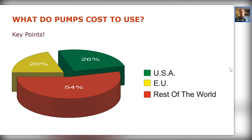In terms of how power consumption is split globally: the US accounts for roughly 25%, the European Union 20%, and the rest of the world 50%. Pumps are consuming very large amounts of power worldwide.